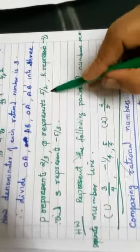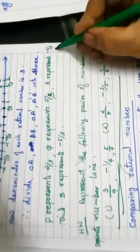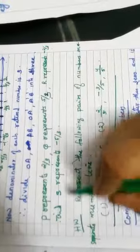Here, P represents 2 by 3, Q represents 5 by 3, R represents minus 2 by 3 and S represents minus 5 by 3.